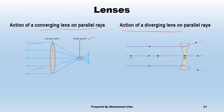The action of diverging lenses on parallel rays: parallel rays pass through a diverging lens and spread in different directions, away from a central point. They appear to be coming from this point, and this point is called the focal point or principal focus.